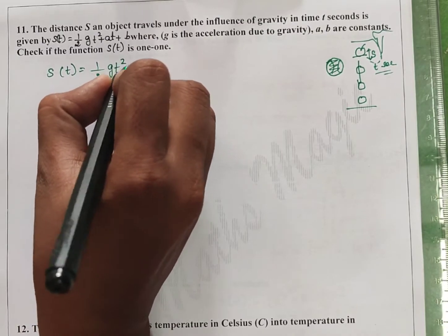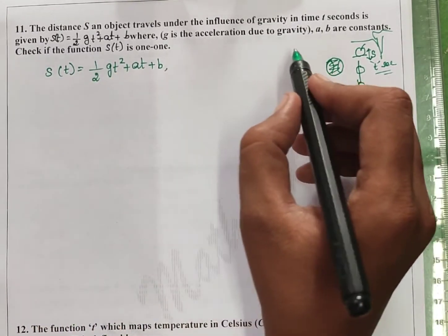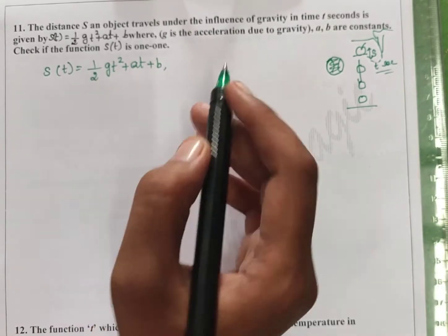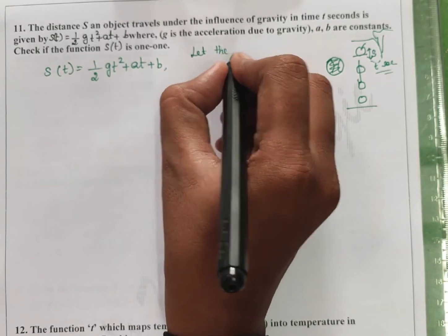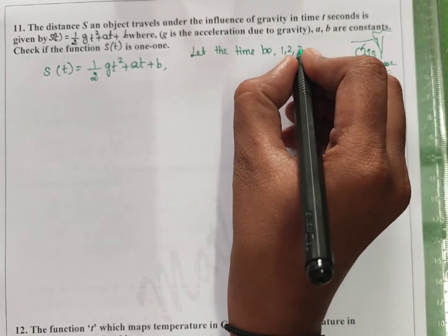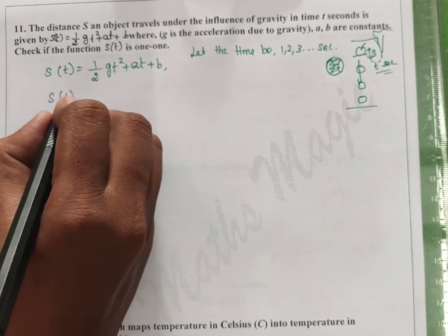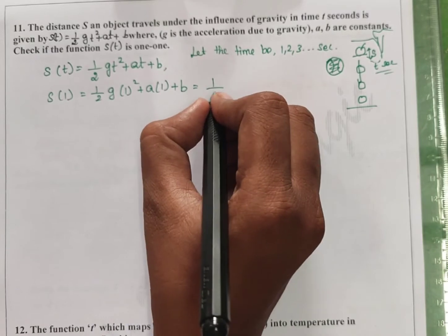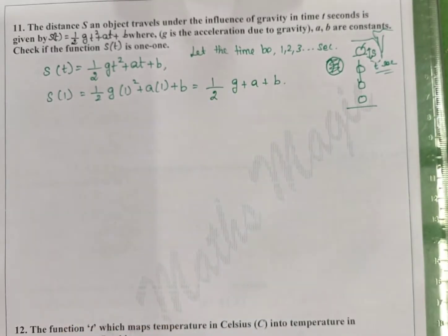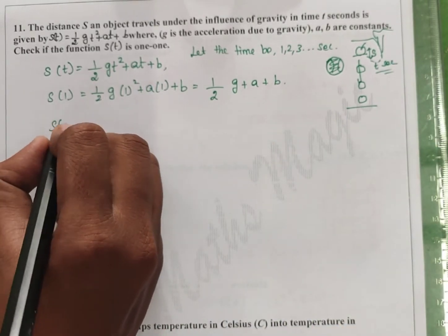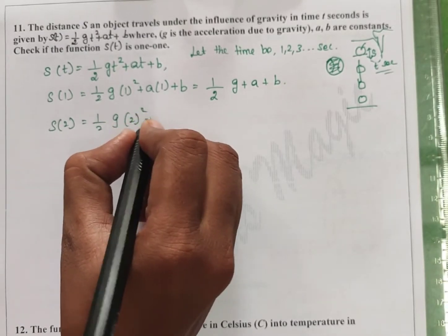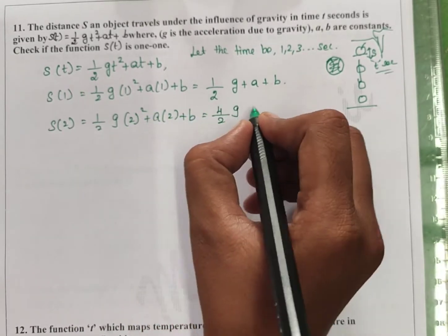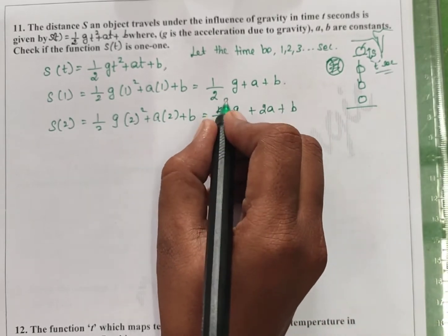g is the acceleration due to gravity, and a and b are constants. Check if the function s(t) is one-to-one. Now let the time be 1, 2, 3 seconds. For t=1 second, we substitute: half into g into 1 squared plus a into 1 plus b, which gives half g plus a plus b. For t=2, we substitute: half into g into 2 squared plus a into 2 plus b, giving 2g plus 2a plus b.